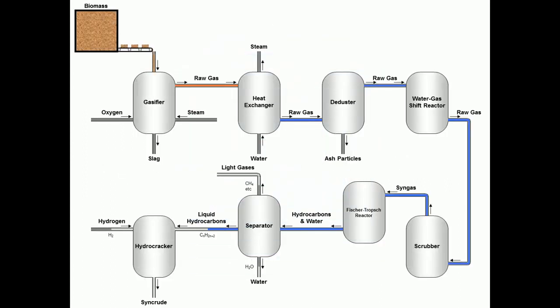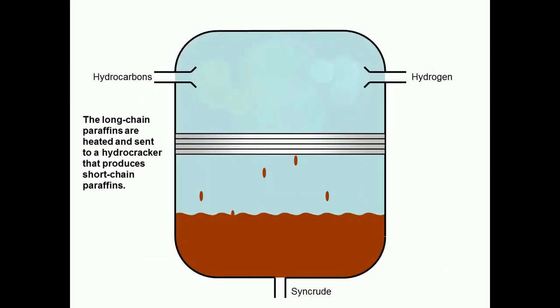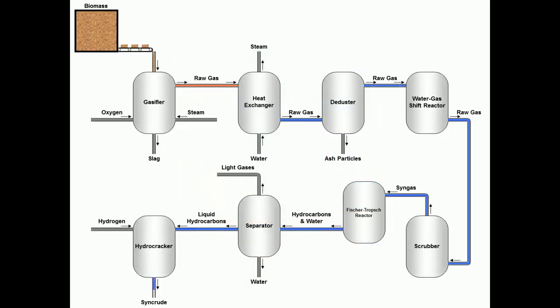The last step is hydrocracking. In a hydrocracker, the long-chain paraffins are heated and reacted with hydrogen to form short-chain paraffins, such as jet fuel, diesel and gasoline. Finally, the end product is stored.